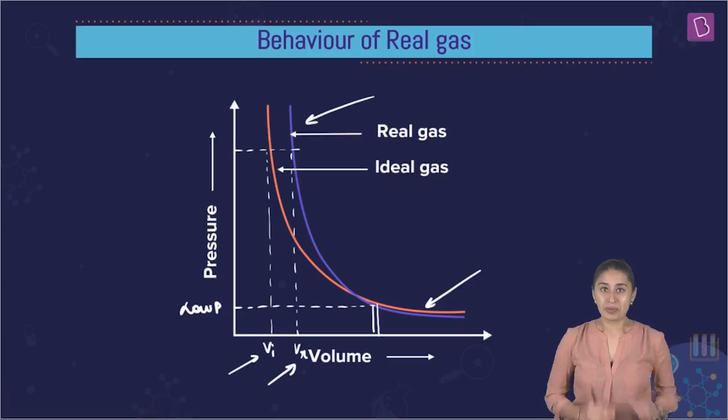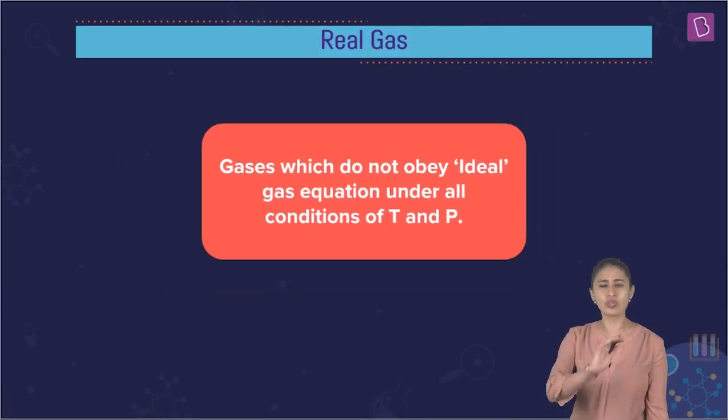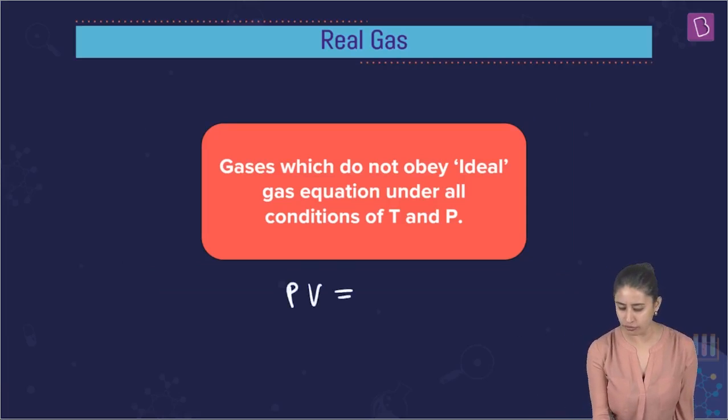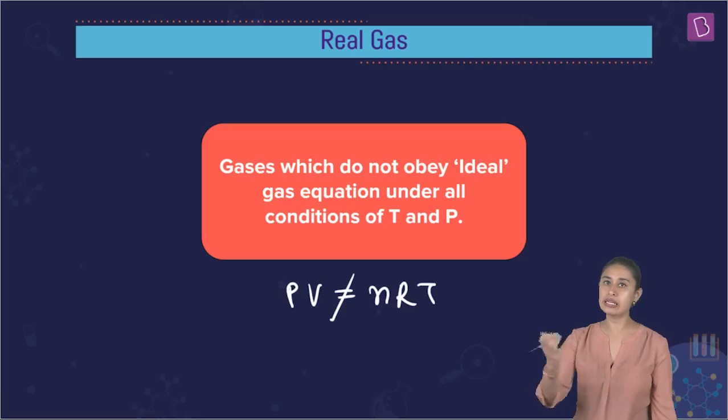So why is there this deviation? How can we find the deviation? What were the different postulates which were not applicable? We need to find it out. We need to come closer to the reality. So for that, let's understand real gases. The definition is crystal clear that gases which do not obey ideal gas equation under all conditions of temperature and pressure. Any gas which does not fulfill PV equals NRT at all ranges of temperature and pressure is a real gas.